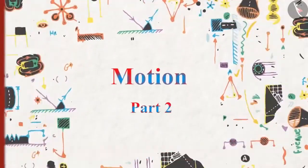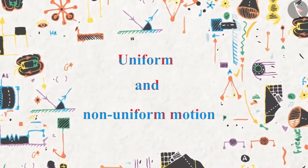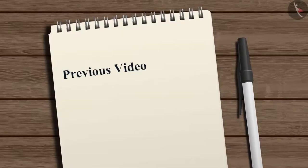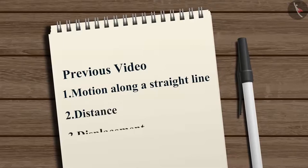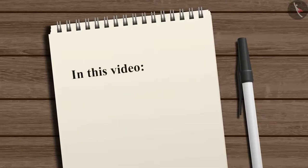Motion Part 2: Uniform and Non-Uniform Motion. In the previous video, we learned about the motion of an object along a straight line and about the concepts of distance and displacement. In this video, we will learn about uniform and non-uniform motion and about speed.